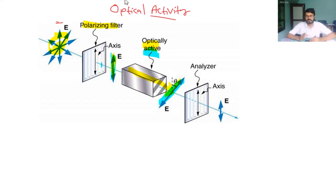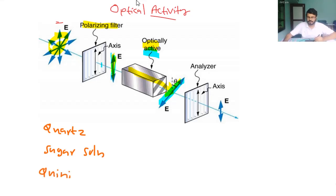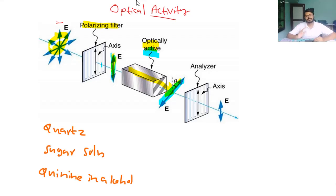Examples include quartz, which has optical activity; sugar solution; quinine in alcohol, which will show optical activity; and turpentine, which will also show optical activity. These materials are optically active, meaning they can rotate the plane of vibration or plane of polarization of a plane polarized light.